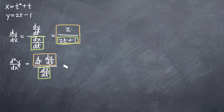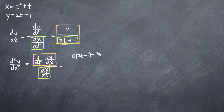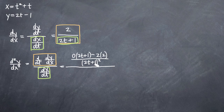This shouldn't be too difficult. Our numerator will be the derivative of two over two t plus one, which we'll use the quotient rule to find. Remember that the quotient rule tells us to take the derivative of our numerator — so the derivative of two, which is just zero — and multiply that by the denominator, so two t plus one. We'll subtract from that the numerator, two, times the derivative of the denominator, and the derivative of two t plus one is just two. Then we divide all of that by the square of the denominator, so two t plus one squared. That's our numerator of our second derivative. The denominator is just dx/dt, which we've already calculated as two t plus one.